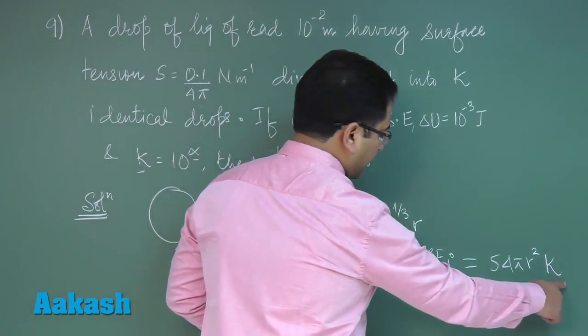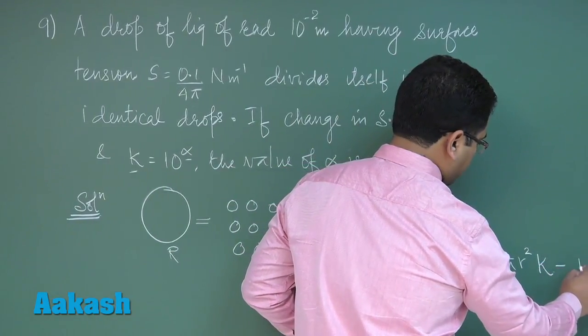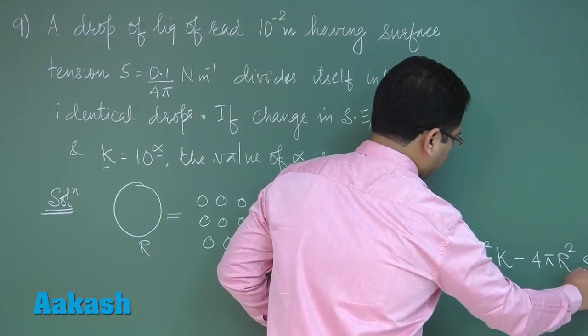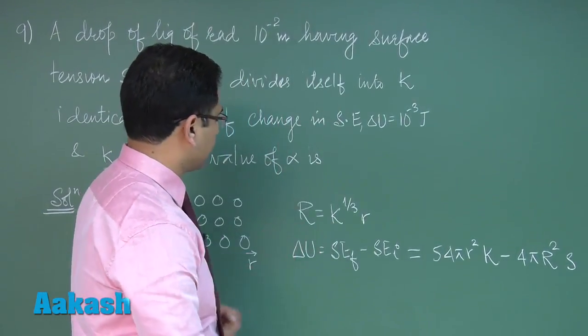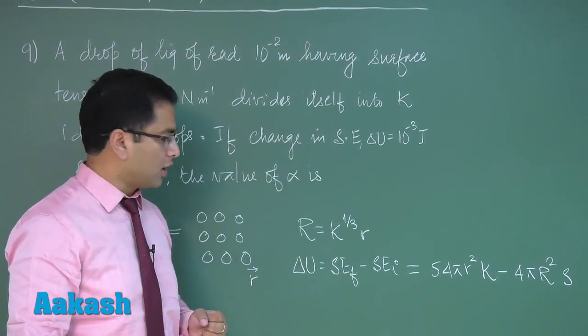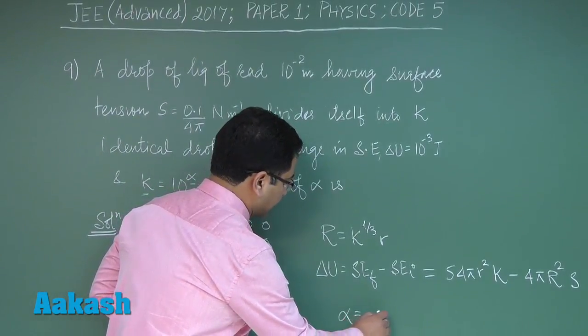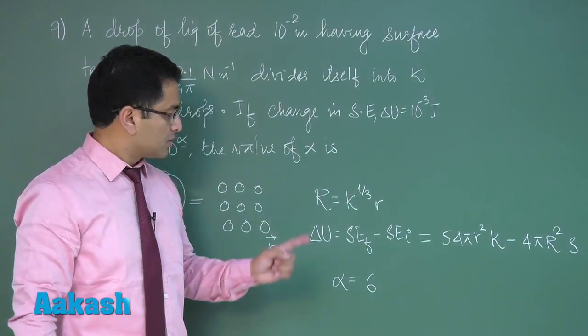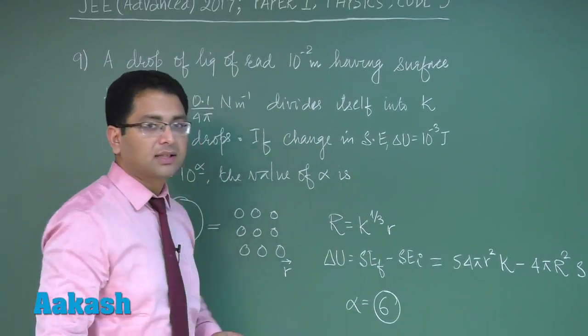The final surface energy is k × 4πr²S. Now all the values are given here, and when we solve this we get the value of α as 6, and that is the required answer. So 6 would be the correct integer for question number 9.